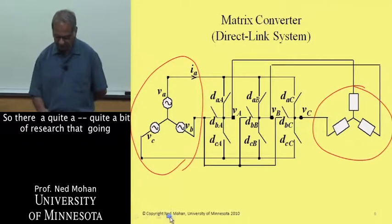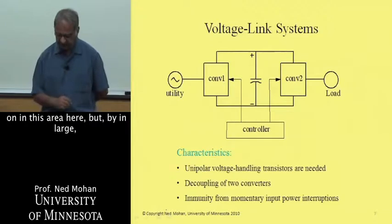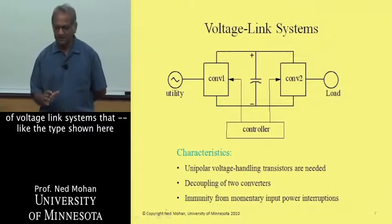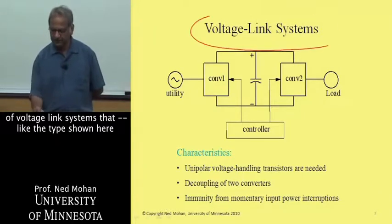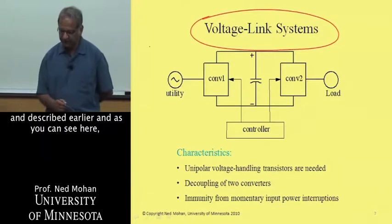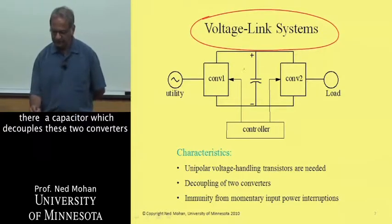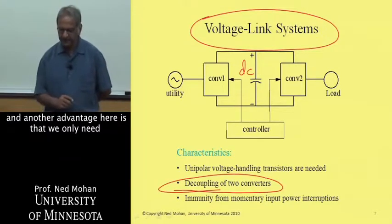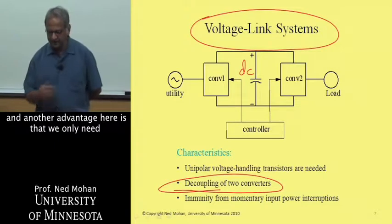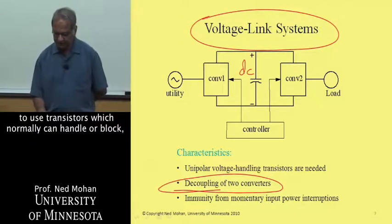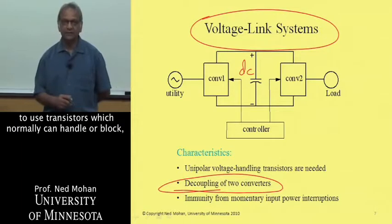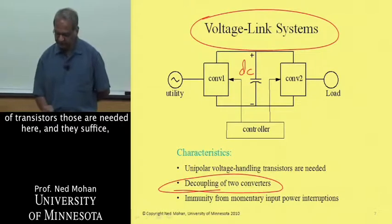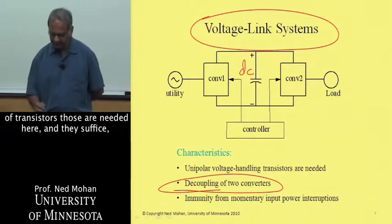So there's quite a bit of research that's going on in this area here. But by and large, most power electronic converters consist of voltage link systems like the type shown here and described earlier, and as you can see here, there is a capacitor which sort of decouples these two converters. And another advantage here is that we only need to use transistors which normally can handle or block a unipolar voltage, so those are the type of transistors, those are needed here, and they suffice.